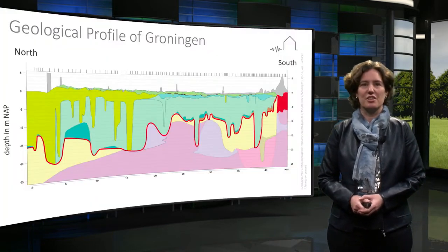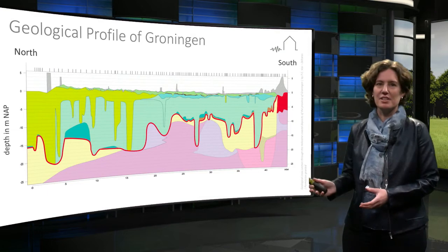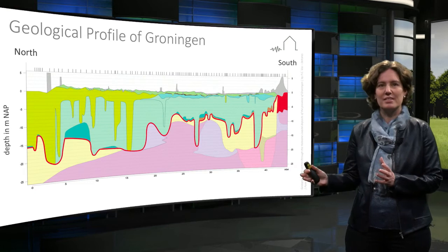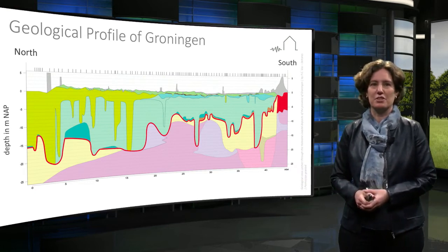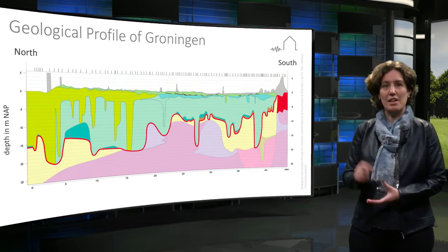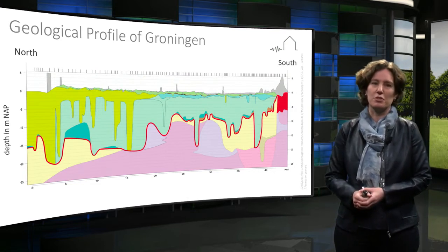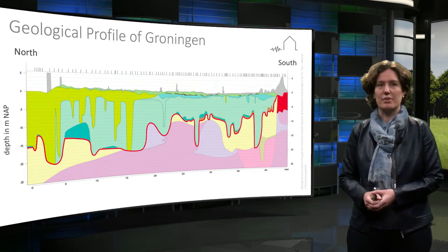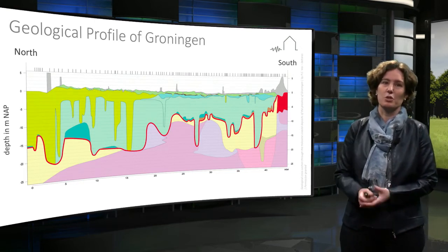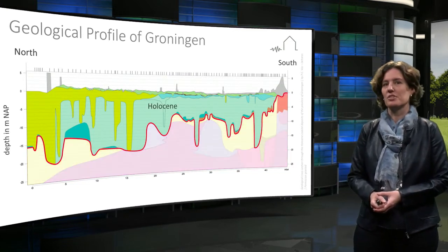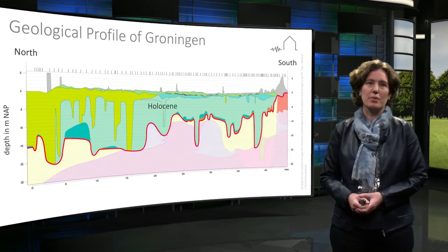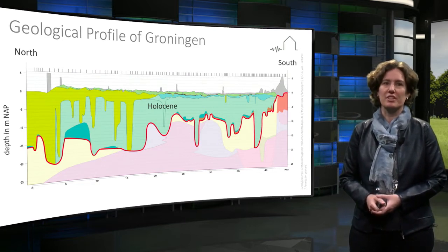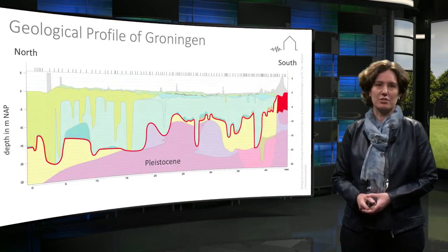Let's first take a look at the shallow geology of Groningen. Here you see a cross-section through Groningen from north to south. The length is 40 kilometers and we are looking at the top 25 meters below the surface. This is the very last part of the path the earthquake travels, but also the most important part, because depending on the soil types the earthquake signal travels through, the signal will be changed. Groningen subsoil in this depth range consists mainly of sands, clays and peats from both the geologically more recent Holocene and the older Pleistocene age.